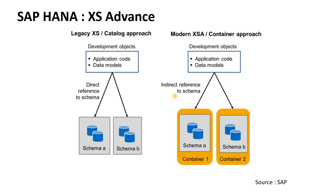Earlier we had Extended Services, now called Extended Services Classic, which has been retired since 1.0 SP11. We now have Extended Services Advanced with a lot of new features, and it is the new tooling mechanism SAP suggests you use. The main difference is the schema-less option — earlier in XS Classic we pointed to a schema, now we have containers. Whenever you create a new project there will be a new HDI container — HANA Deployment Infrastructure — created.